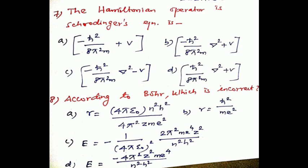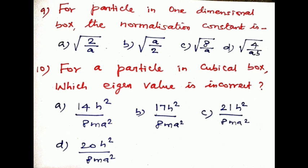Question number nine: for a particle in a one-dimensional box, the normalization constant is dash. The answer is option a: square root of 2/a. The normalization constant capital A equals √(2/a).